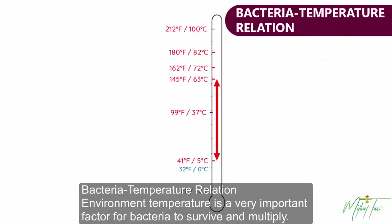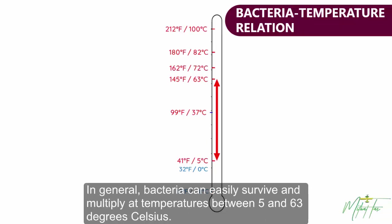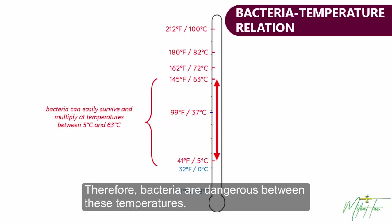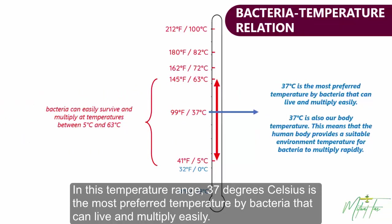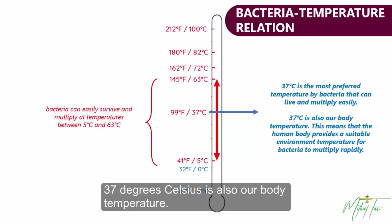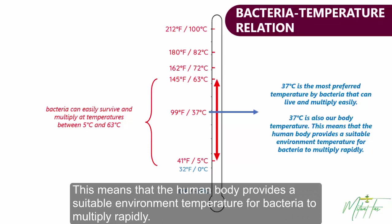Bacteria-temperature relation: environmental temperature is a very important factor for bacteria to survive and multiply. In general, bacteria can easily survive and multiply at temperatures between 5 and 63 degrees Celsius, making bacteria dangerous within this range. Within this temperature range, 37 degrees Celsius is the most preferred temperature by bacteria. 37 degrees Celsius is also our body temperature, meaning the human body provides a suitable environment for bacteria to multiply rapidly.